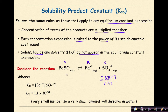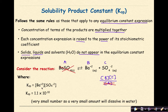Our reactant BaSO4 in this dissolution equation is a solid, so it does not appear in the expression. The KSP expression therefore only includes the two ions. Looking up the KSP value in the textbook, it is 1.1 times 10 to the negative 10, which is a very small number — meaning only a very small amount dissolves in water.